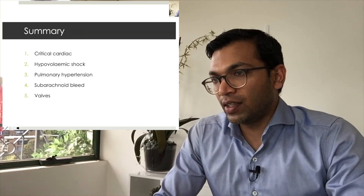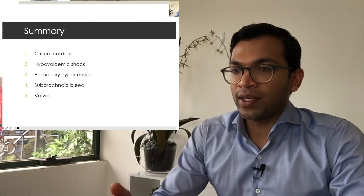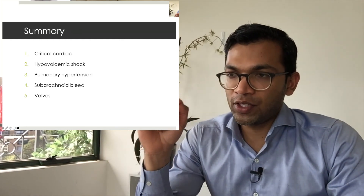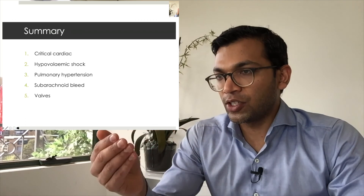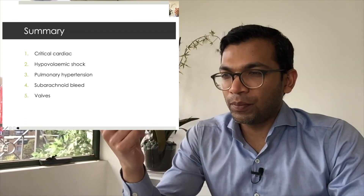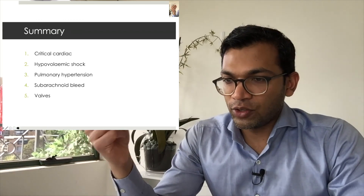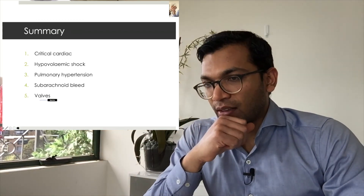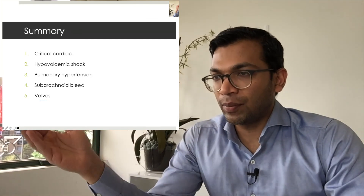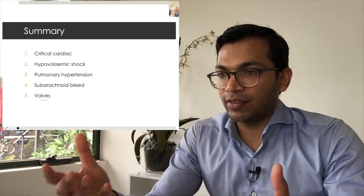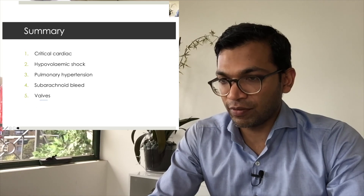In summary, we've covered critical cardiac, hypovolemic shock, pulmonary hypertension, subarachnoid bleed, and valves — a sample of common cardiovascular relevant anaesthetic inductions. Having priorities specifically outlined for each allows you to tailor your drugs accordingly, and in a complex scenario combining pathologies — such as critical cardiac plus hypovolemic shock — you can articulate and work through potentially conflicting goals.